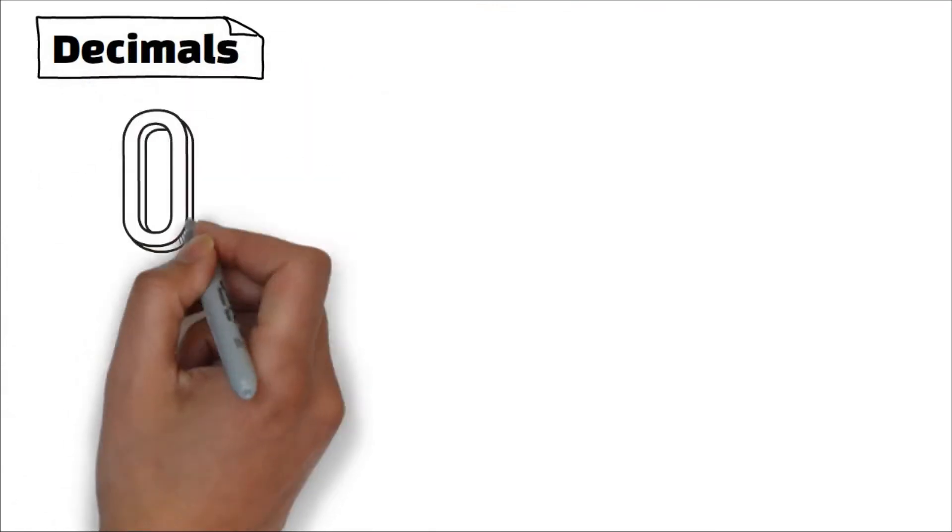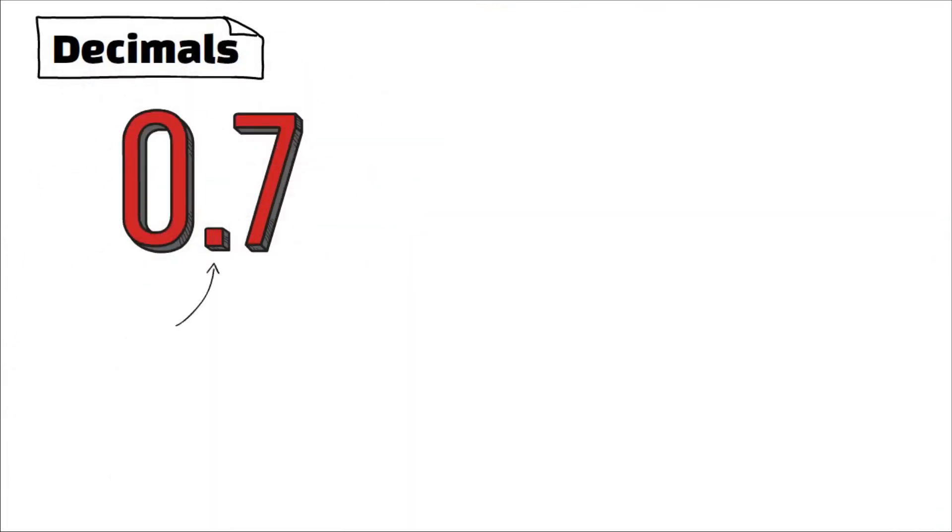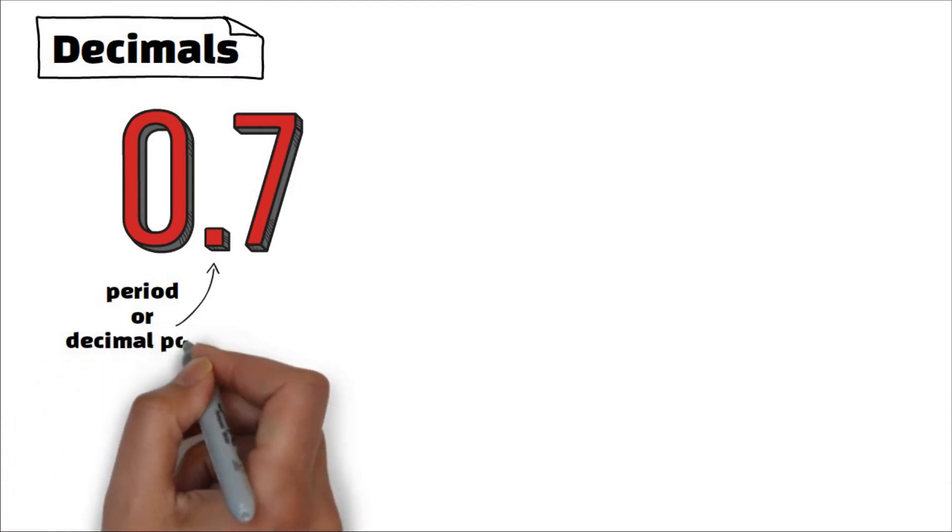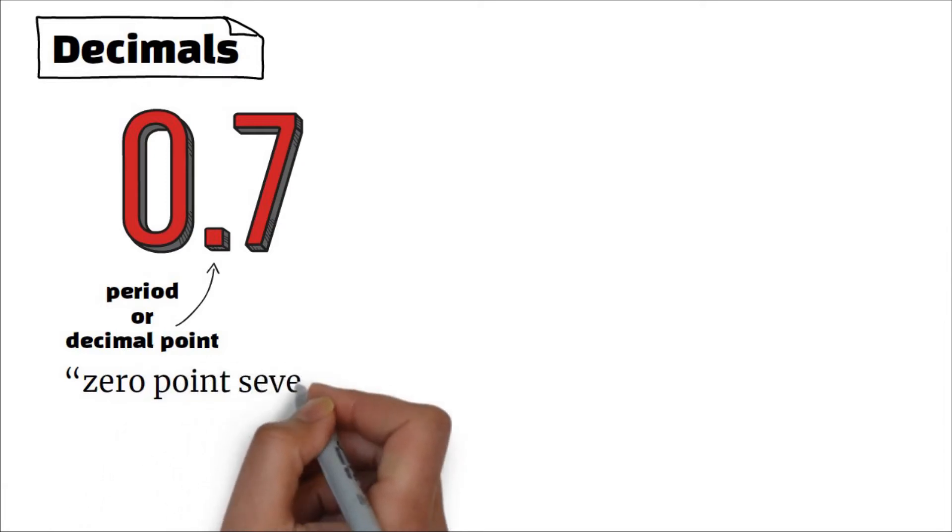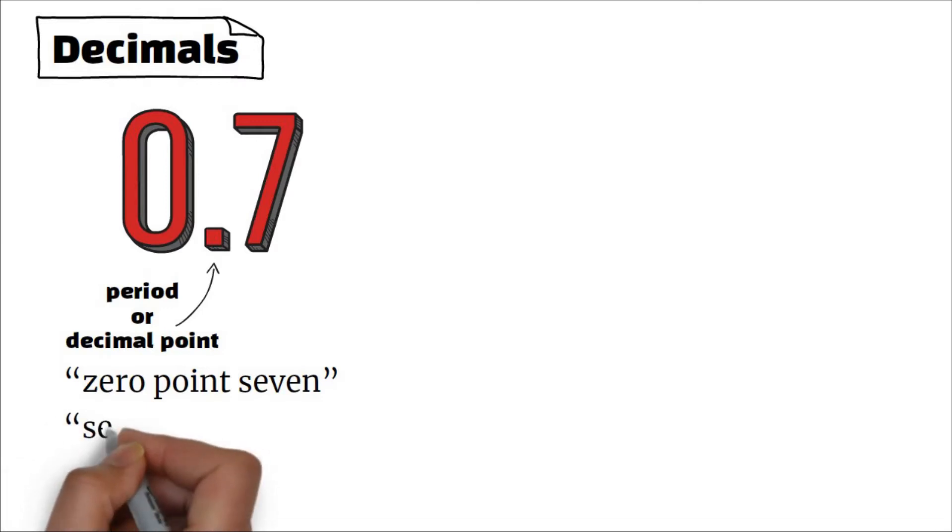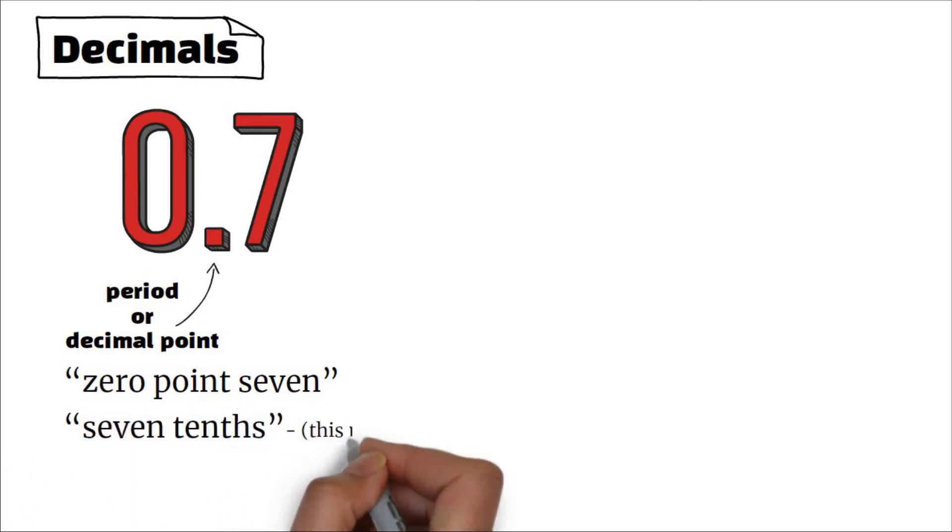Decimals: the dot in the middle is the period or the decimal point. This is how we read it: zero point seven. Or we could read it as we read fractions: seven tenths, although this is less common. Sometimes the zero is omitted and we say point seven.